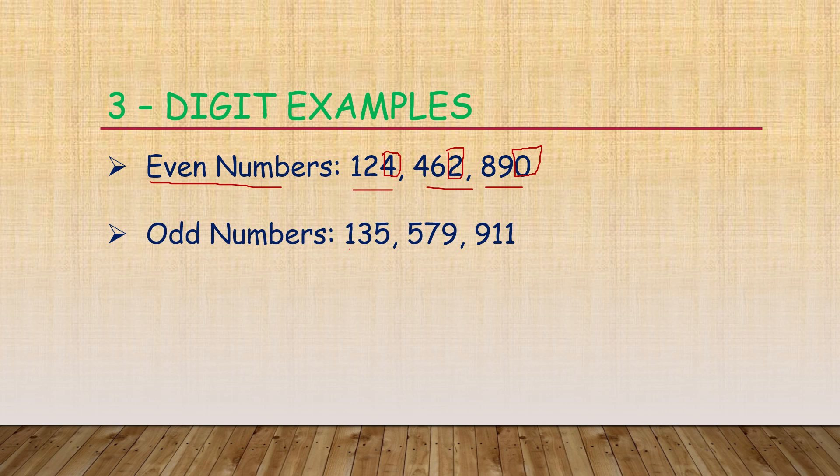Here 135, 579, 911. If you observe, here the last digit is 5, and here is 9, here is 1. These all numbers are odd numbers. That's why the 3-digit number is an odd number.